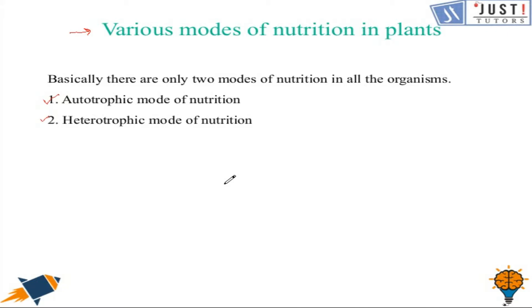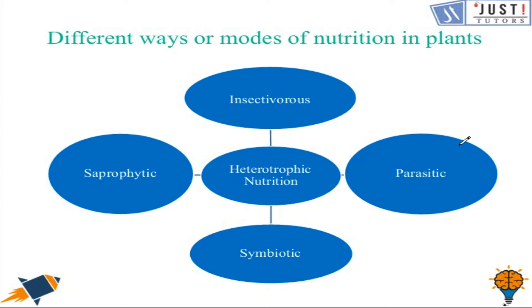In this video we will focus mainly on heterotrophic mode of nutrition, in which an organism does not prepare its own food but rather takes food prepared by other organisms. Heterotrophic plants do not possess chlorophyll; therefore they cannot produce their own food using photosynthesis, since chlorophyll is the most important component needed for that process.